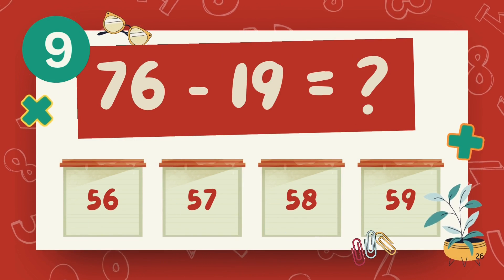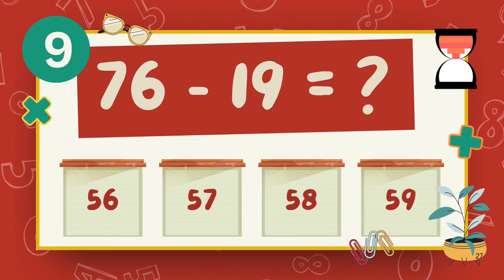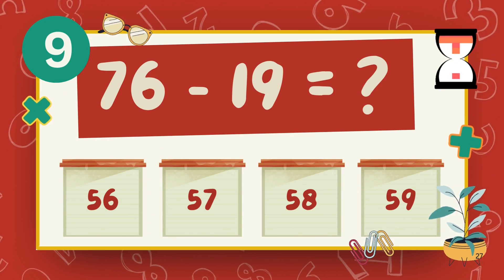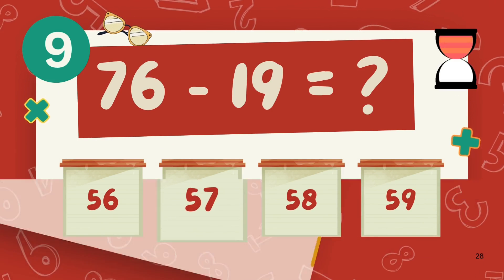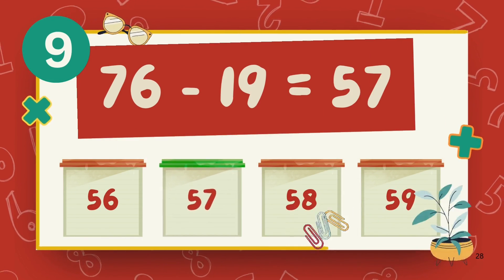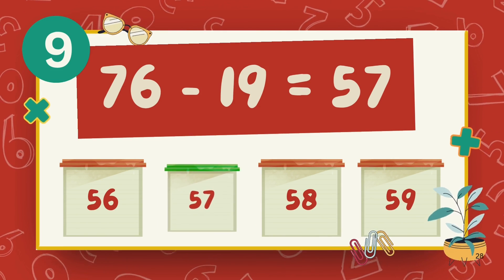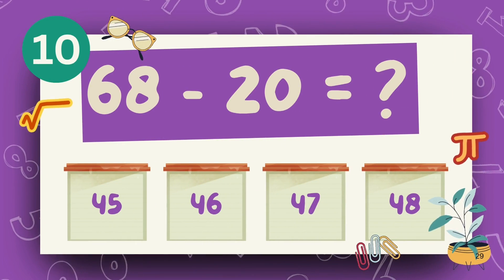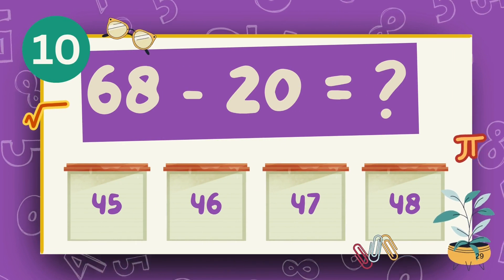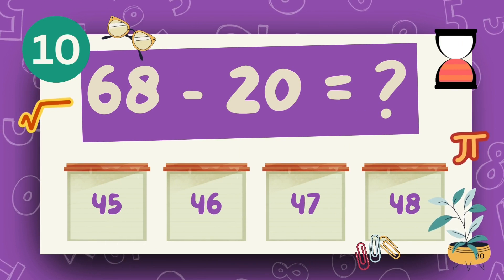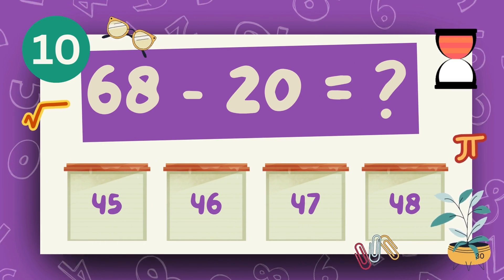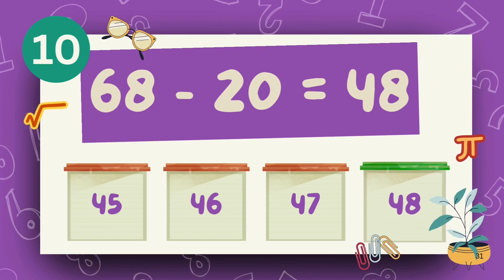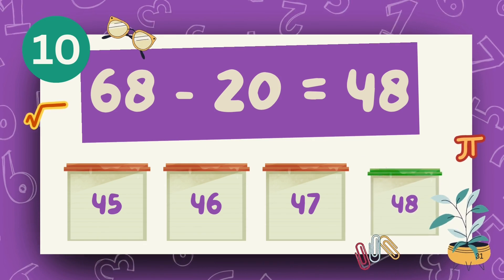What is 76 minus 19? The answer is 57. What is 68 minus 20? The answer is 48.